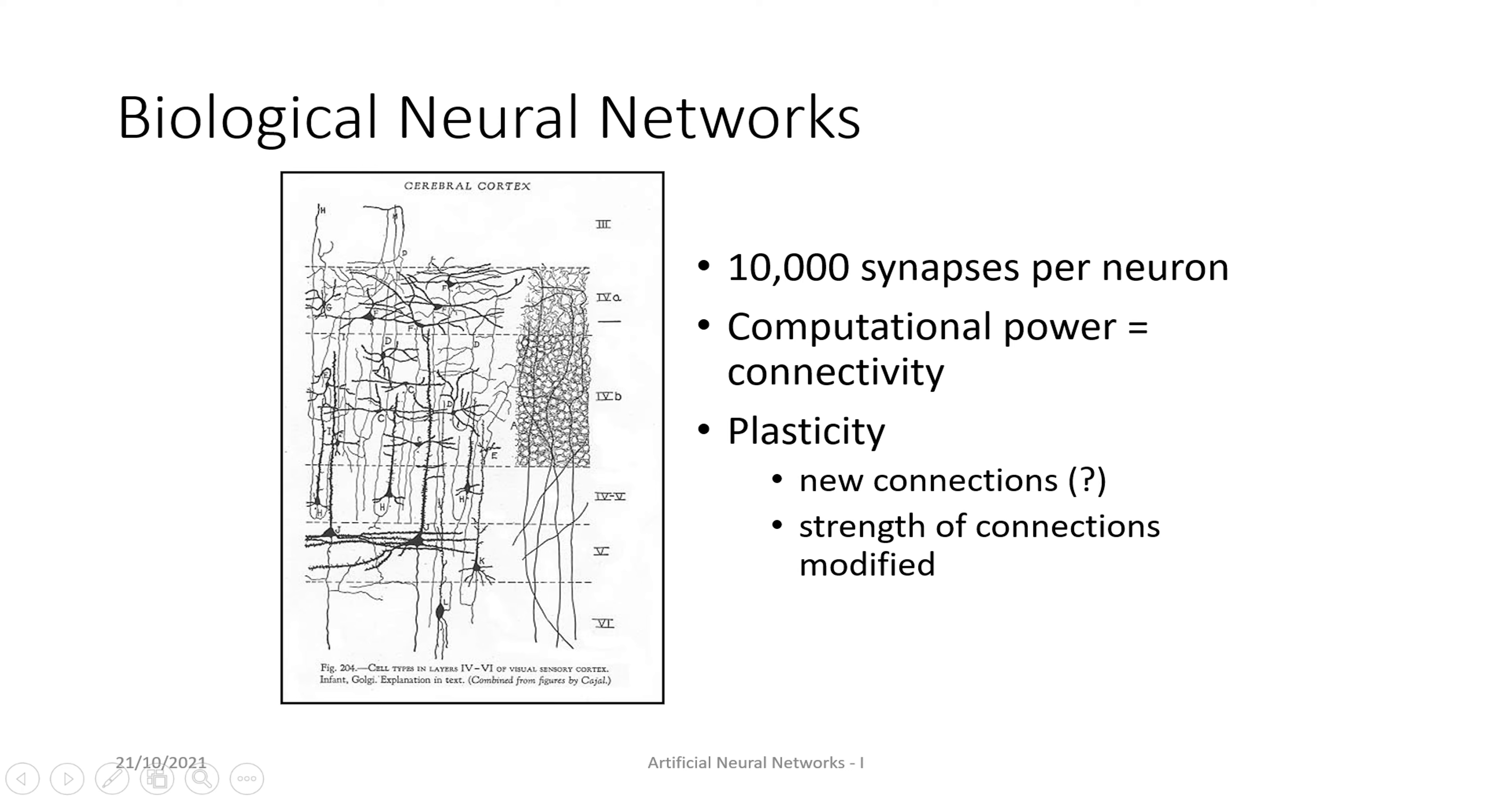Here we can see the architecture of biological neural networks. It is constantly creating new connections, rewiring itself. It's the most complex machinery, to be precise. The computational power of this machinery depends upon its connectivity, its plasticity, the strength of connections, and new connections being formed.